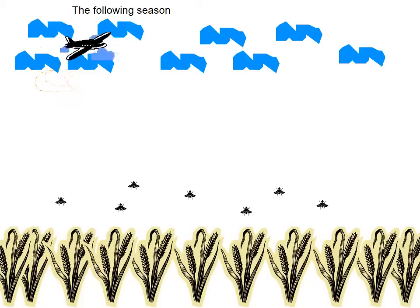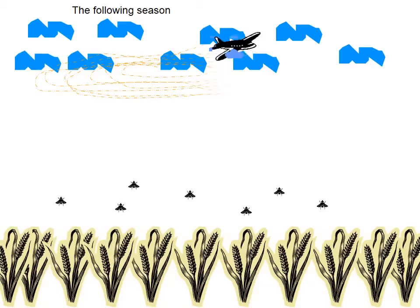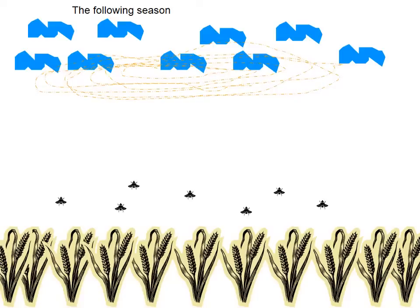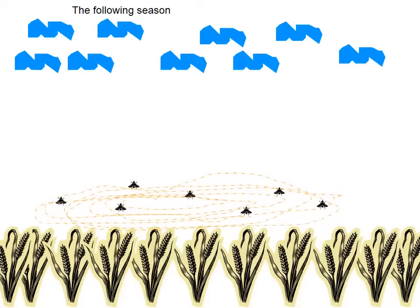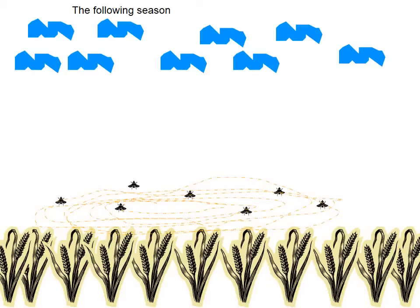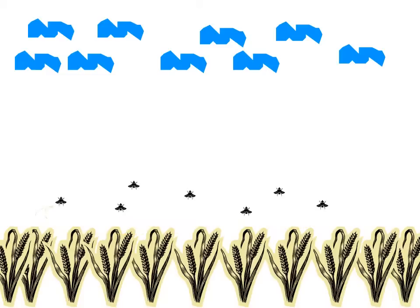The following season, the farmer sprays the same insecticide at the same concentration expecting the same results. But now there's very little effect on the pest population because they all have this allele for partial resistance. The only solution is to either change insecticide or increase the concentration.